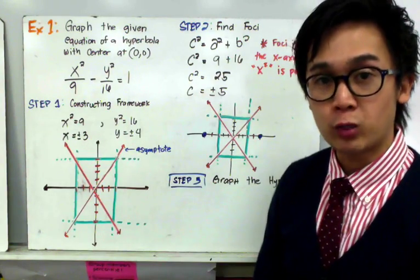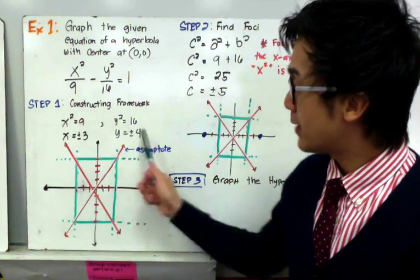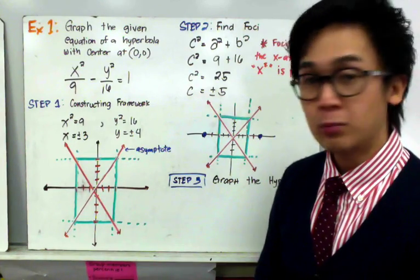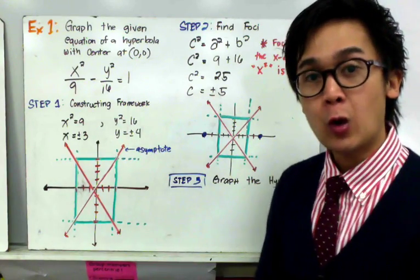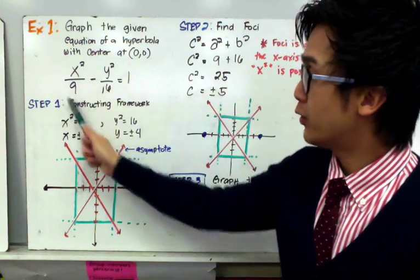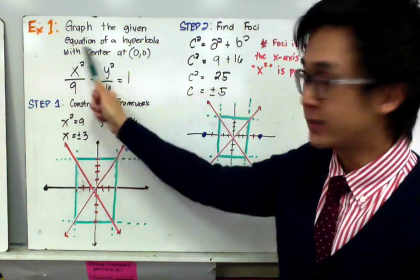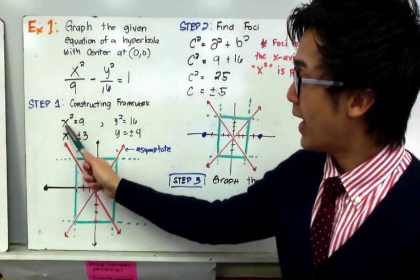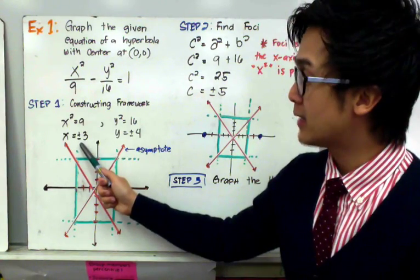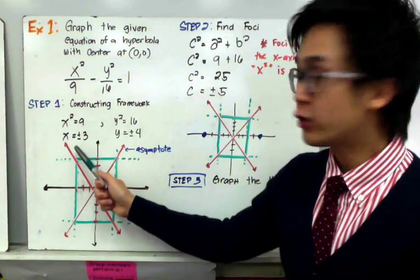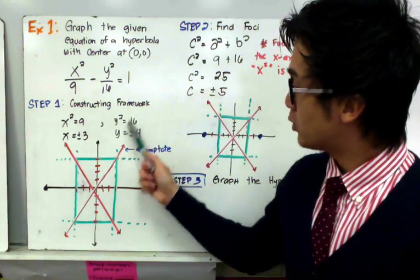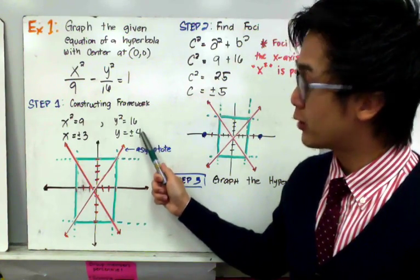We already know this is a hyperbola because the standard equation has the minus sign. The first step is to construct your framework. We need to use the denominator of our first and second terms. The term with x gives us x squared equal to 9, and taking the square root gives x equal to plus or minus 3. For the y-axis, we have y squared equal to 16, which gives y equal to plus or minus 4.